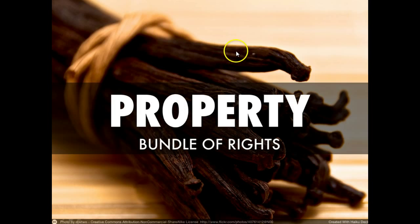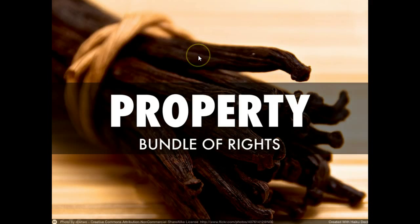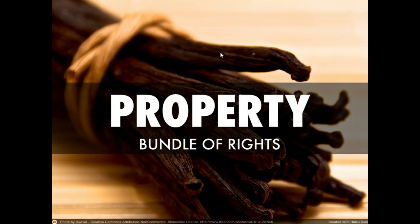When you talk about this bundle of rights, for example, let's say this stick here — indicated at the top — represents one of the items in the bundle of rights you have when you have property. That might be the right to temporarily transfer possession of your property. How do you temporarily transfer possession? Well, if your car doesn't run right, you take it to a mechanic. You still own the car, but you transfer possession of that property temporarily to your mechanic. That's one of the bundle of rights you have when you own property.